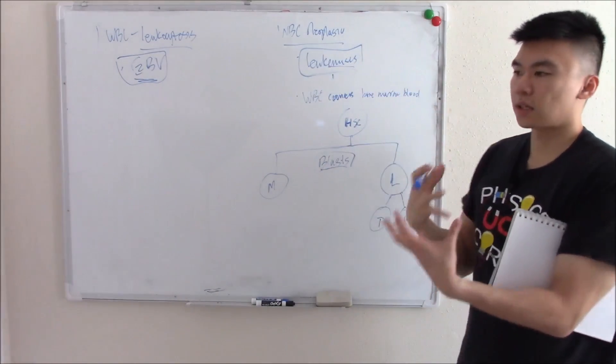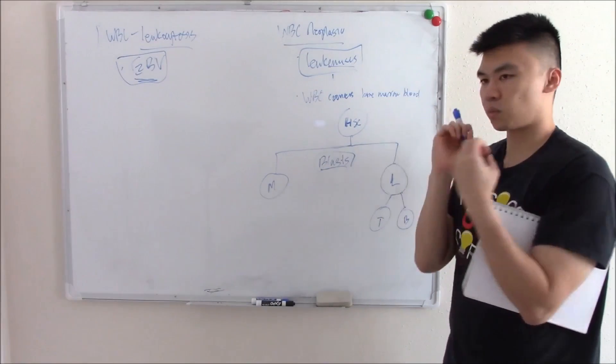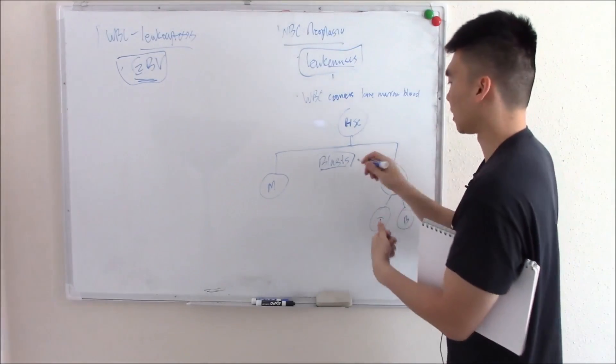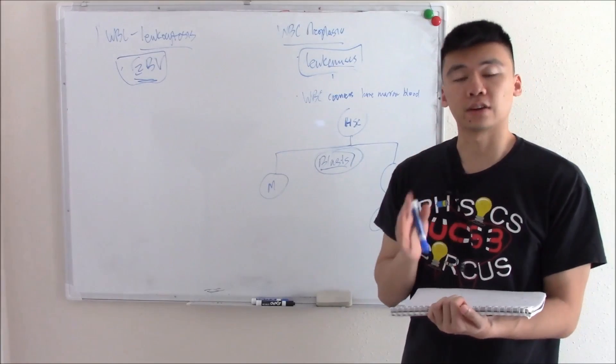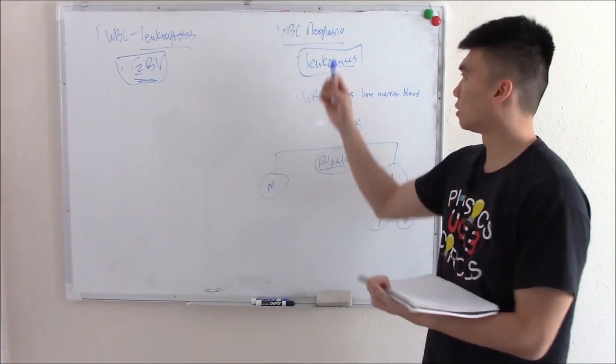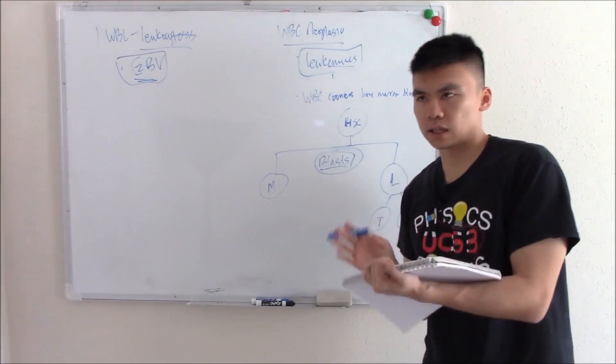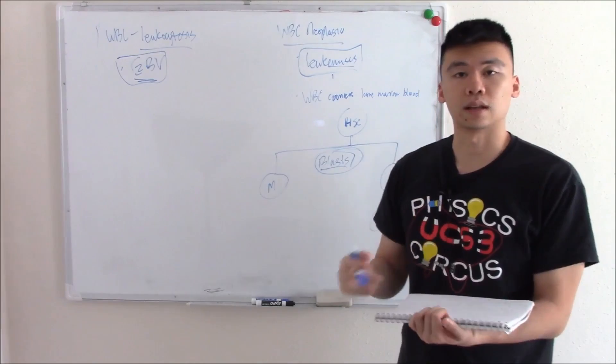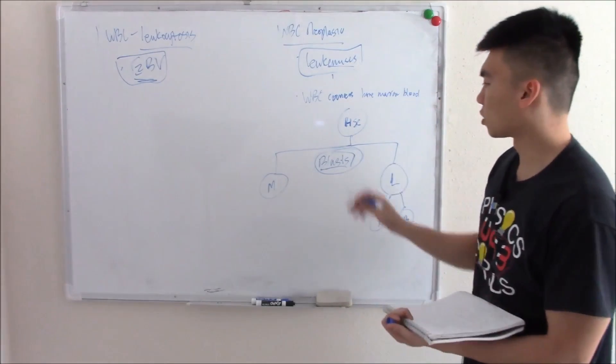In leukemia something goes wrong. You start to proliferate a ton of these immature blasts. These blasts build up in your bone marrow. If it's very aggressive you'll see signs and symptoms early, we call that acute leukemia. If it's less aggressive with a slower, more indolent course, we call that chronic leukemia.